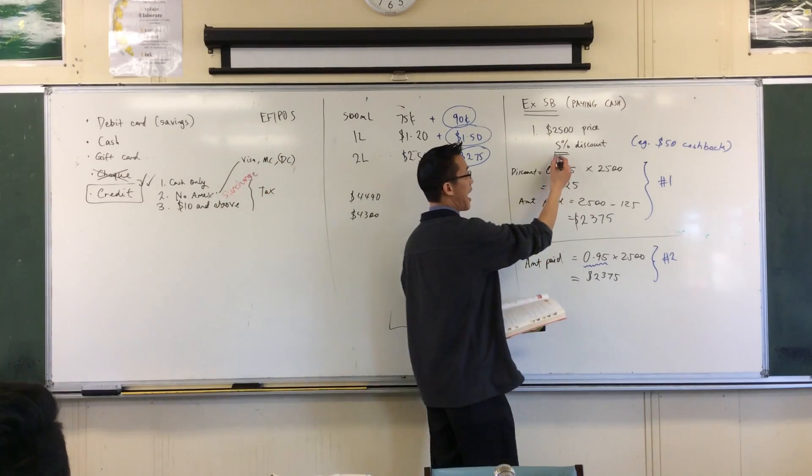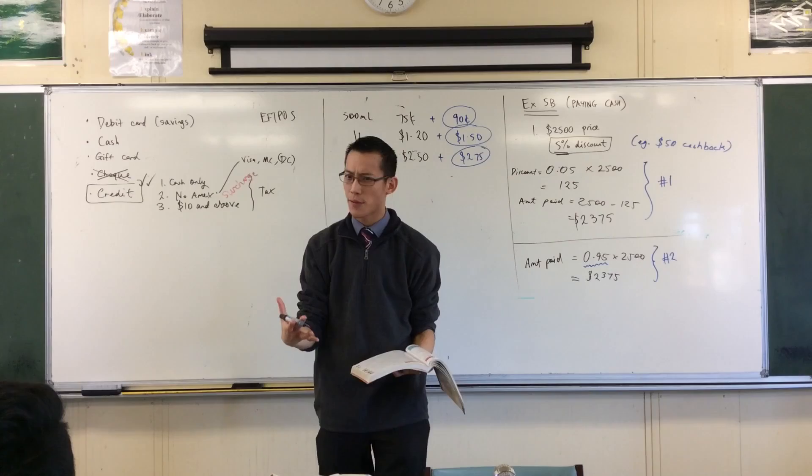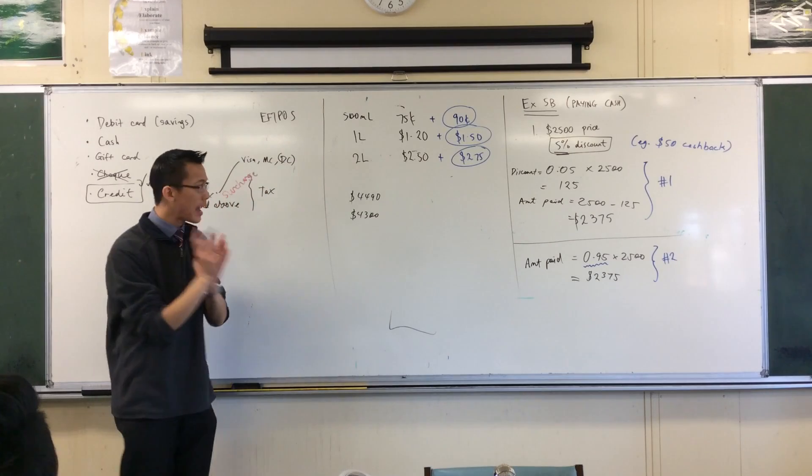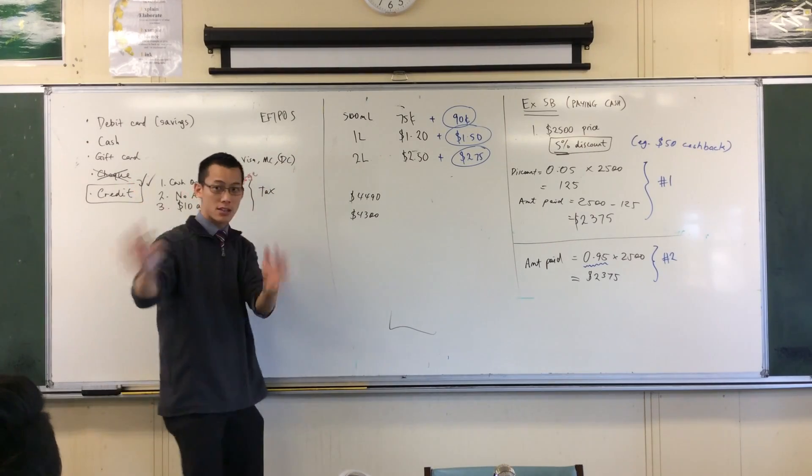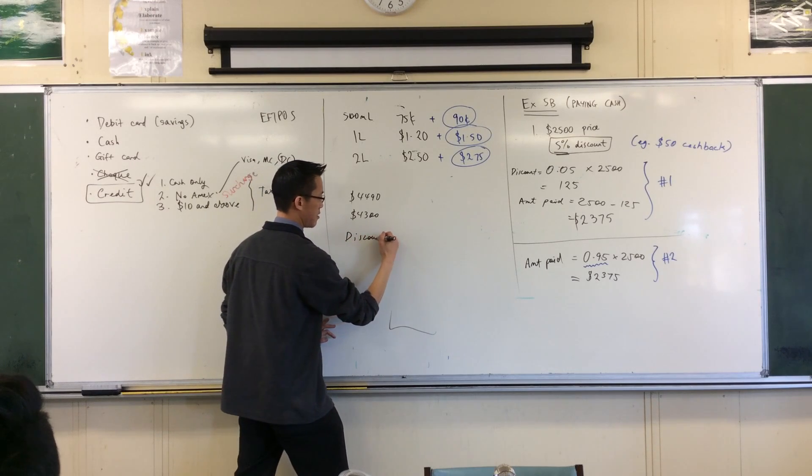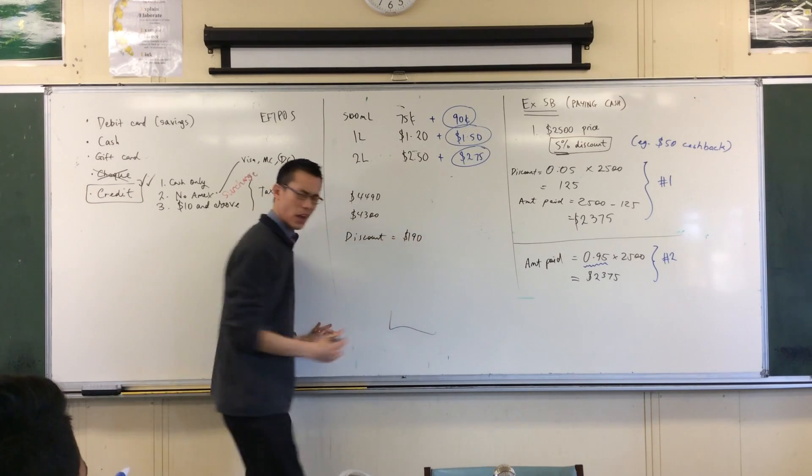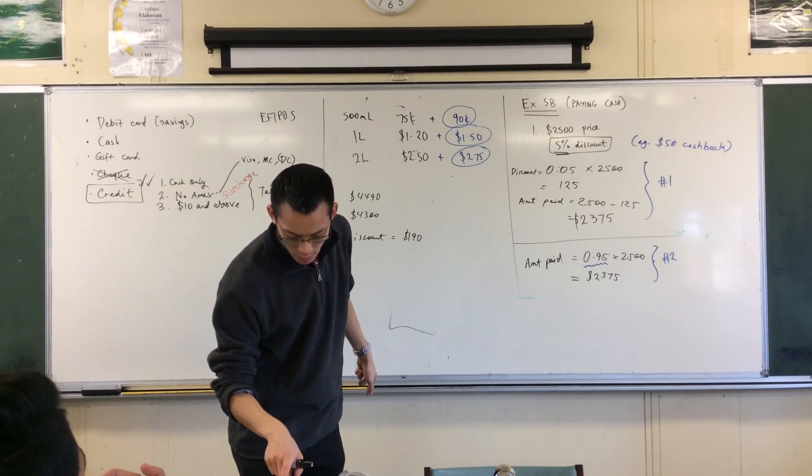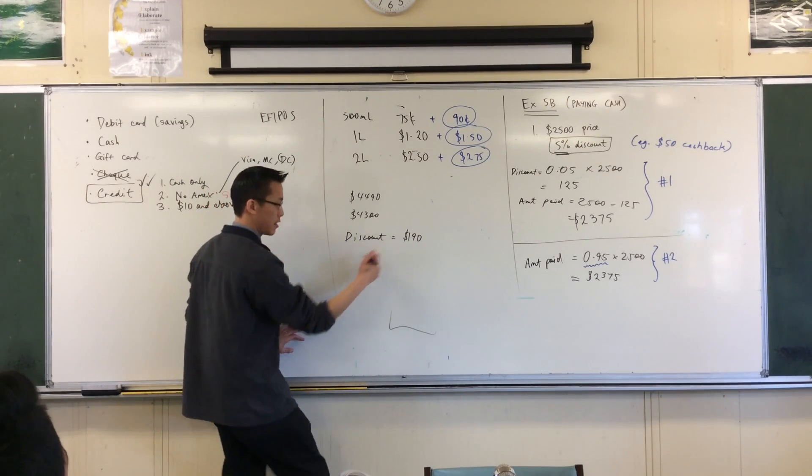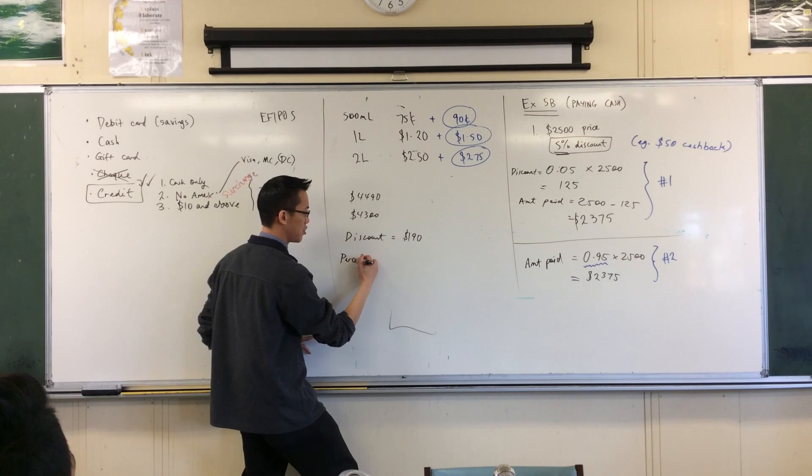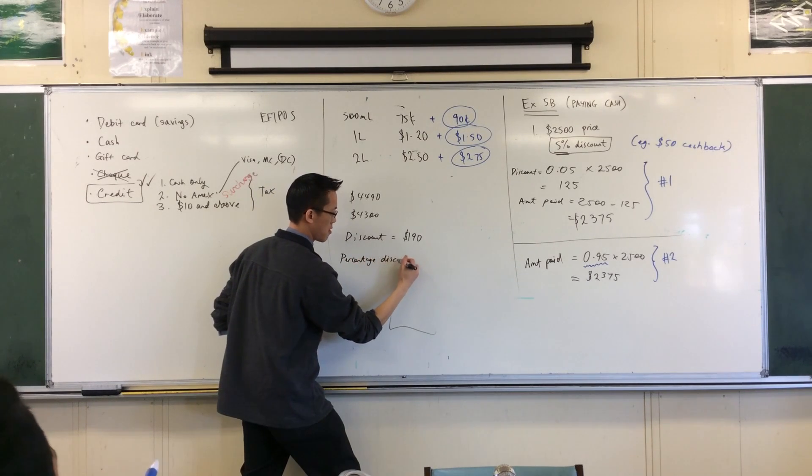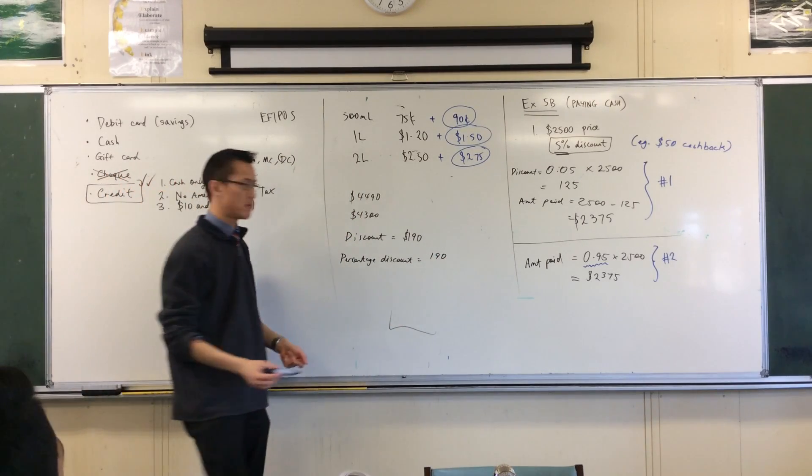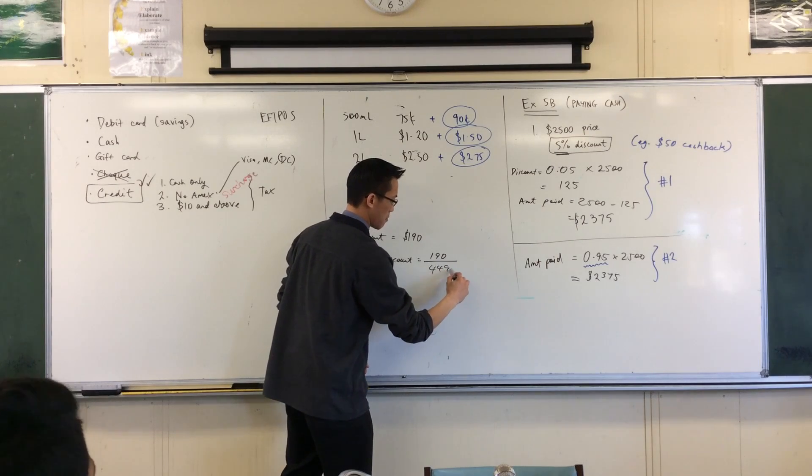But then the question asks something very different to this, right? It says, find the percentage discount given. So, they want us to answer this. You see, they're asking a different kind of thing. Same scenario, right? How would you work it out? How do I work it out? I'm going to do it exactly in reverse, right? So, you guys just told me the discount, right, is $190. So, how do I work out this as a percentage of... It says percentage of the original, right? I'm going to take this $190, right? So, here's the discount. The percentage discount is you take that $190. And you're going to divide by something. What are you going to divide by? It'll be the original now. Like so.